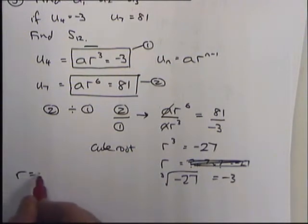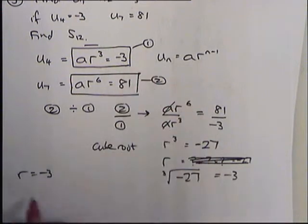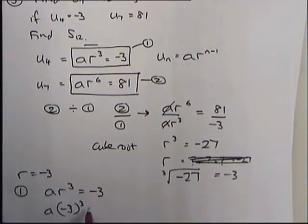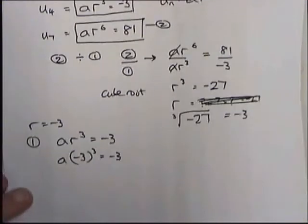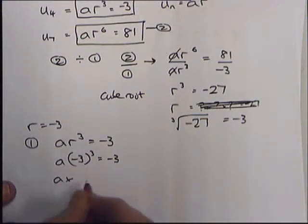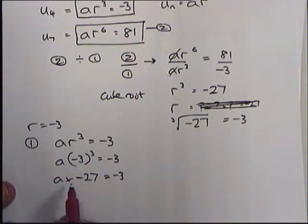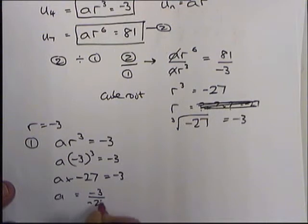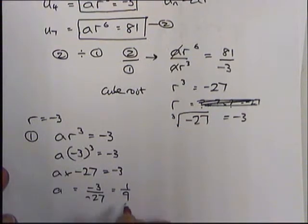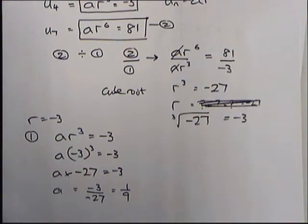Now I know R is minus 3. I go back to equation 1, which said AR cubed equals minus 3, and replace R with minus 3. Minus 3 cubed is minus 27, so I have A times minus 27 equals minus 3. Dividing both sides by minus 27, A equals minus 3 divided by minus 27, which is 1 ninth. So my first term is 1 ninth.